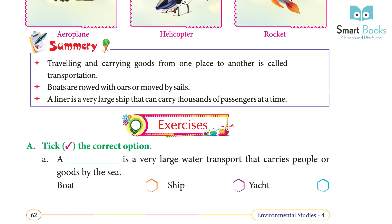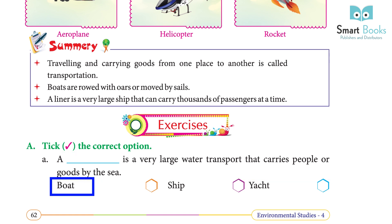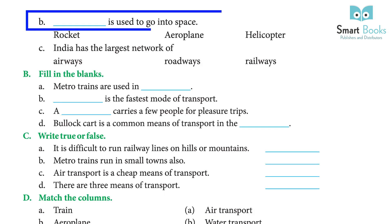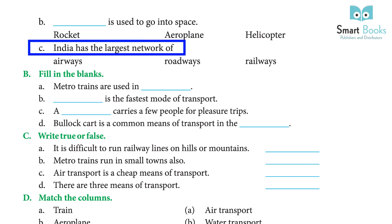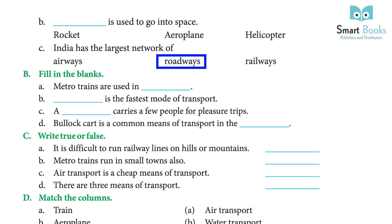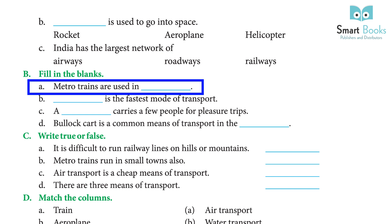Exercise A — Choose the correct option. (a) A dash is a very large water transport that carries people or goods by the sea: boat / ship / yacht. Answer: ship. (b) Dash is used to go into space: rocket / aeroplane / helicopter. Answer: rocket. (c) India has the largest network of: airways / roadways / railways. Answer: roadways.